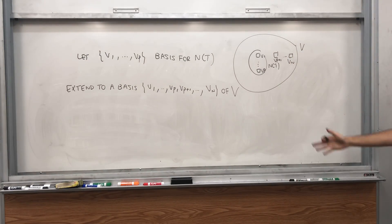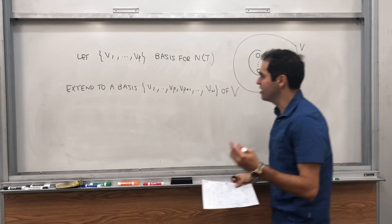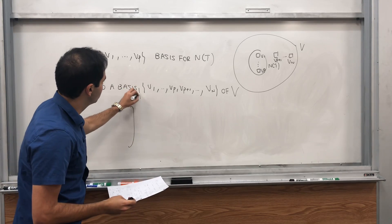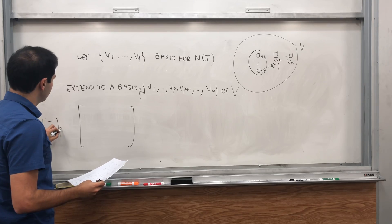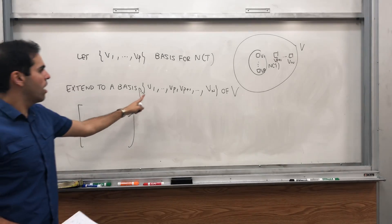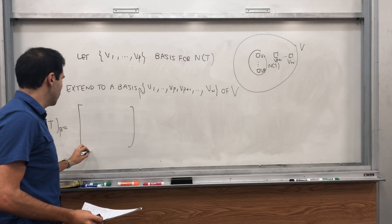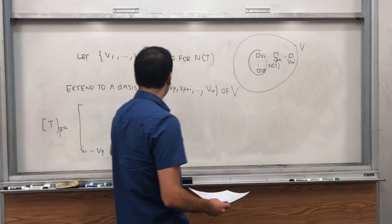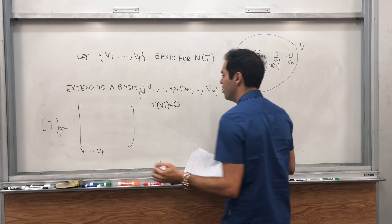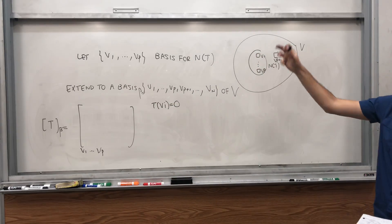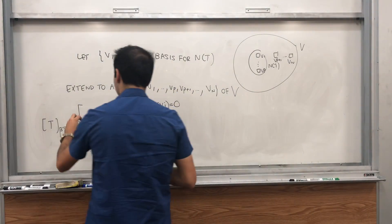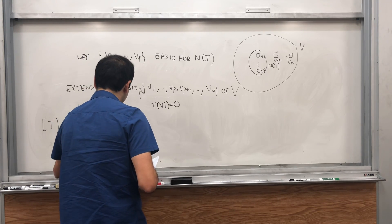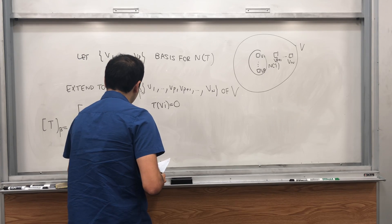And all we need to do is calculate the matrix of our linear transformation. So here the matrix of T, it's simply, so let's call this beta, and then we calculate the matrix of T with respect to beta. All we need to do is calculate T of our Vi's, so this is V1 up to Vp. Well, if you calculate T of those vectors in the null space, well, you just get zero. So which tells us that the first p columns of T have to be zero. So zero, zero, zero. So a bunch of zeros,